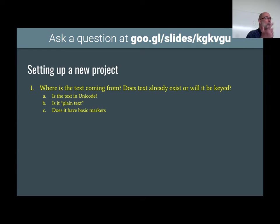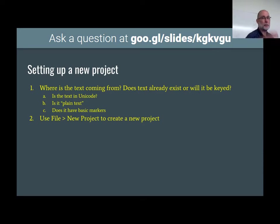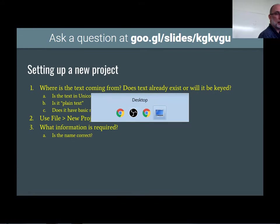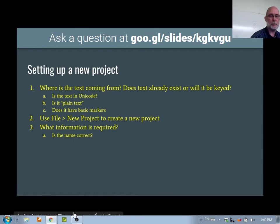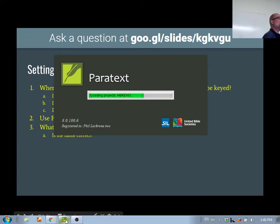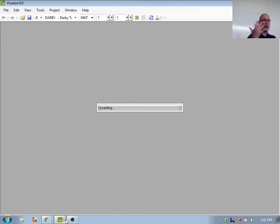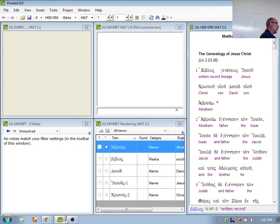So how do I create a new project? I create a new project under File > New Project. There's some information that's required. I'm going to open up Paratext and take us through this. I don't want you to do this yet — I want you to watch with me. And then we'll do this together; you're going to actually create some projects. But first I want you to watch me go through this process.